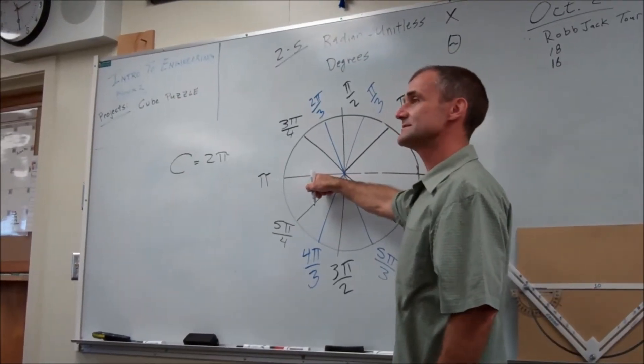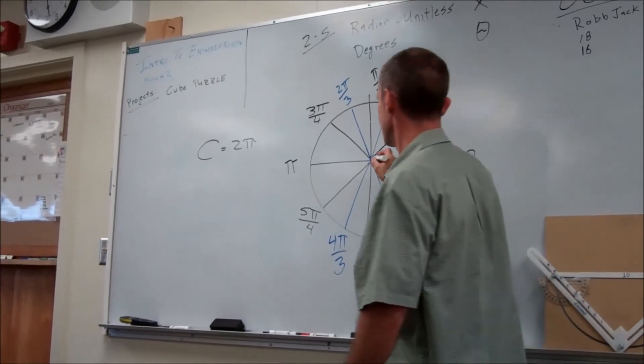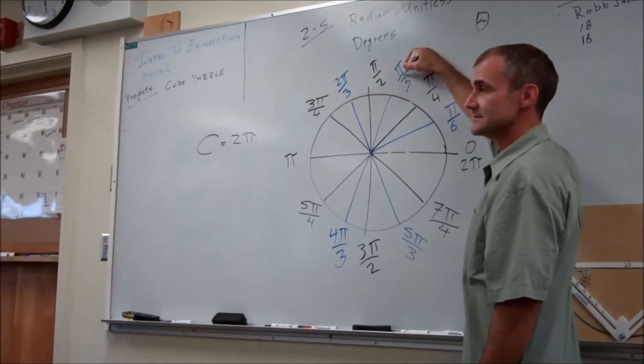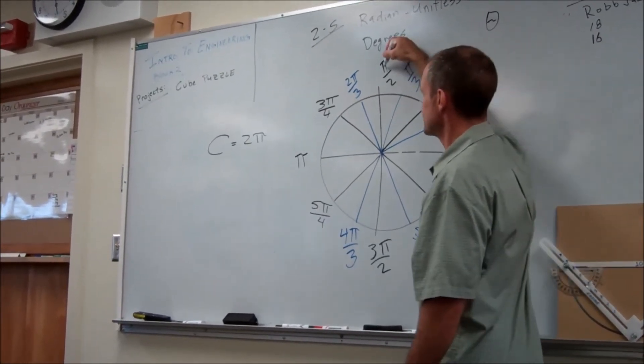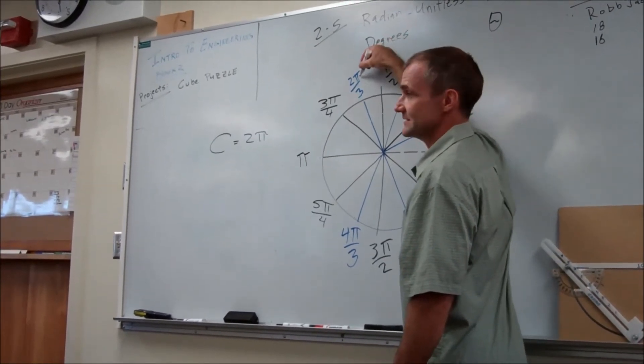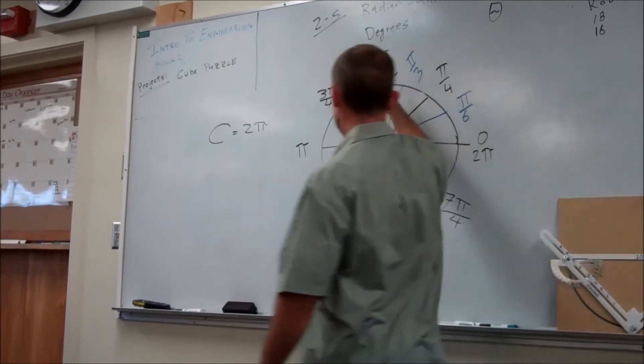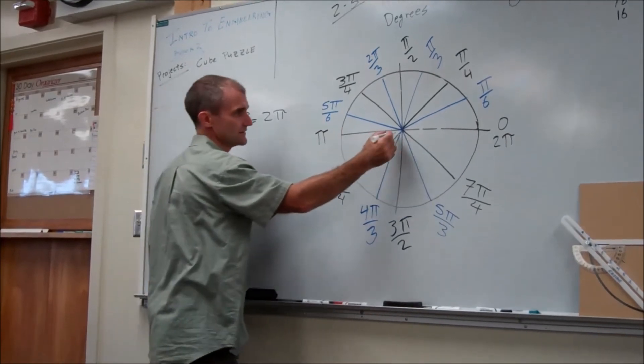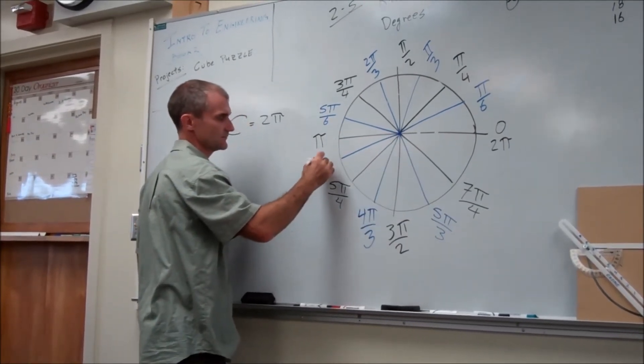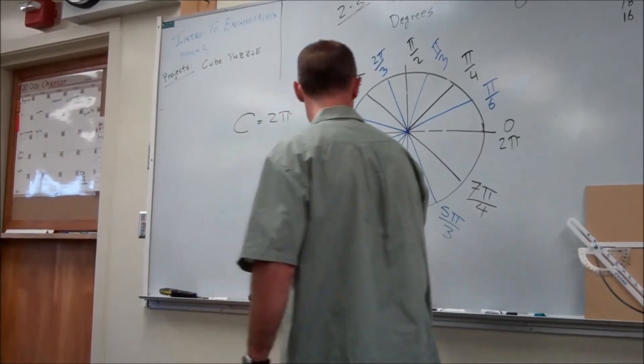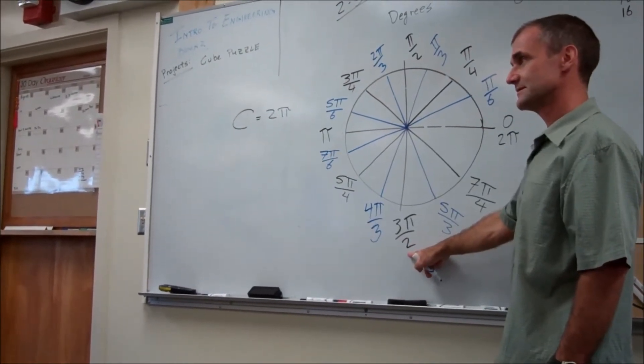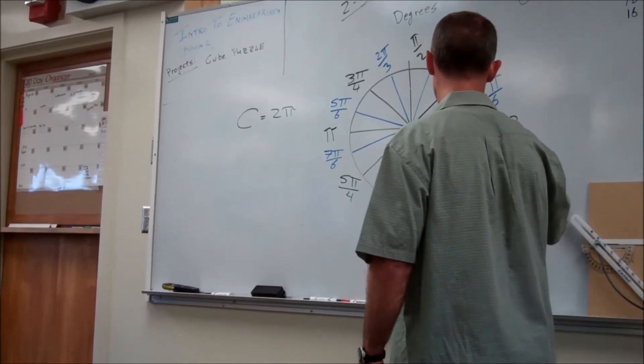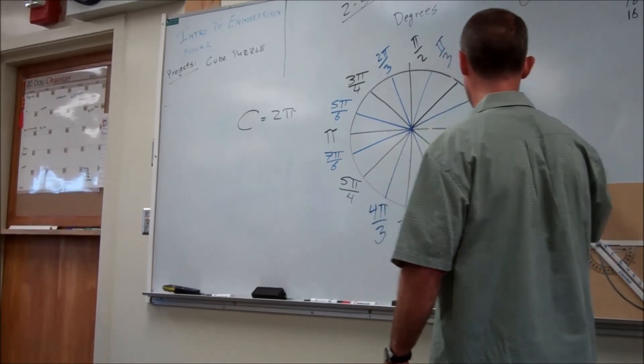30 is one sixth of the way to 180. So my first one is 1 over 6: pi over 6, 2 over 6, 3 over 6, 4 over 6, 5 over 6, 6 over 6, 7 over 6, 8 over 6, 9 over 6, 10 over 6, 11 over 6, 12 over 6.